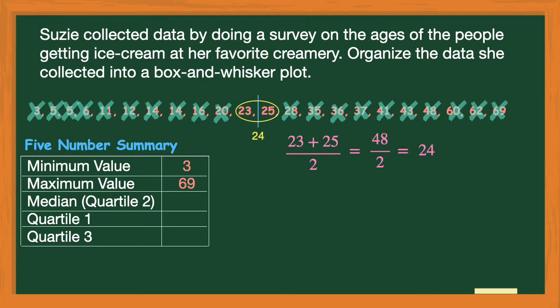So my median of this data set is 24, meaning it's the number in the middle of the data set, splitting it in half — I have the same number of values on the left as on the right. So in my table, for my median quartile two, I'm going to put the number 24.